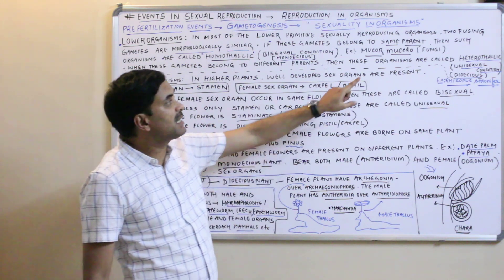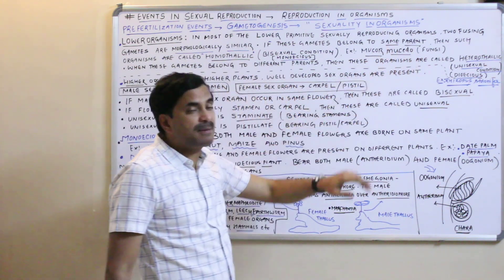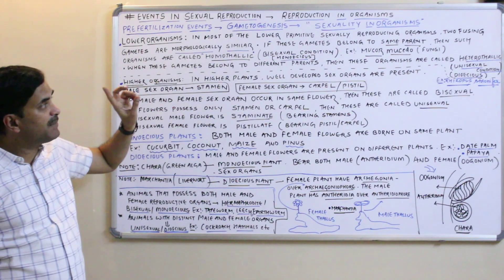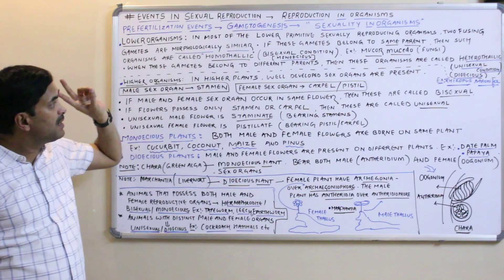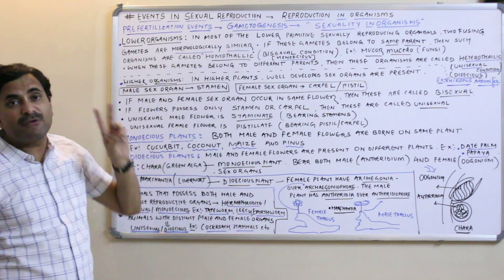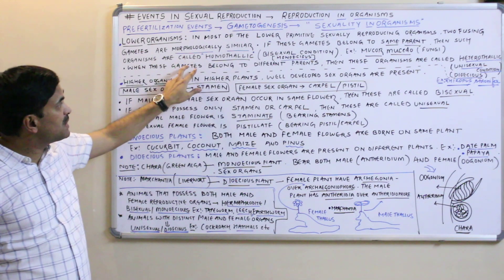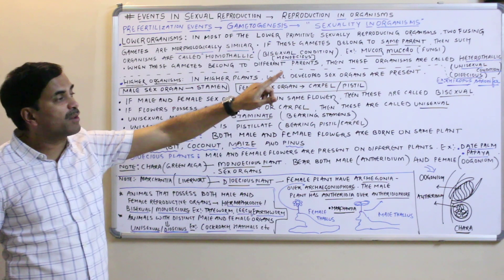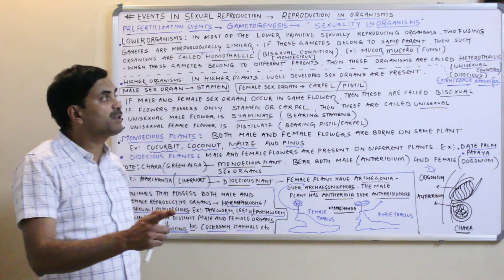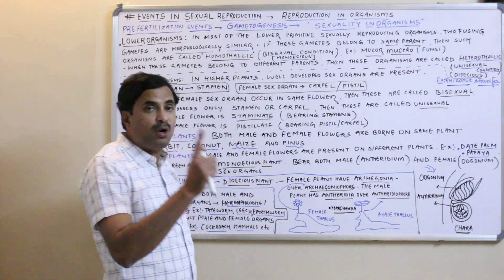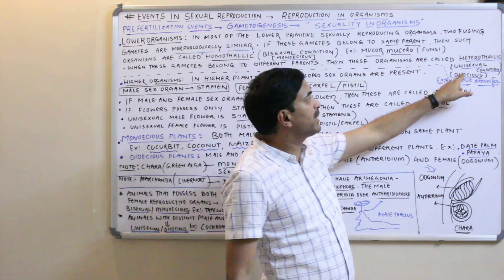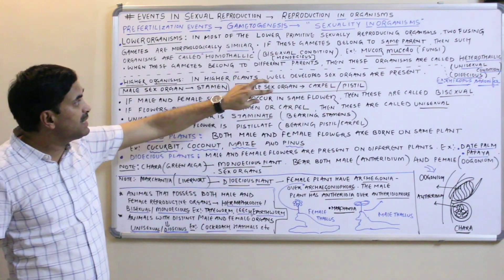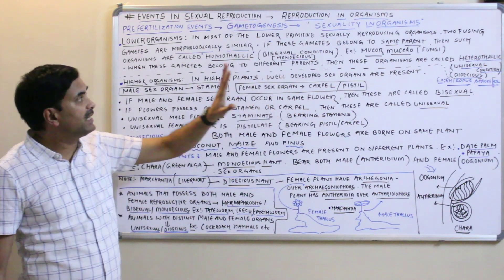The best example of homothelic organisms is the fungus Mucor. When the fusing gametes belong to different parents, these organisms are called heterothelic, or the unisexual condition or dioecious condition. 'Di' means two — referring to two different parents.